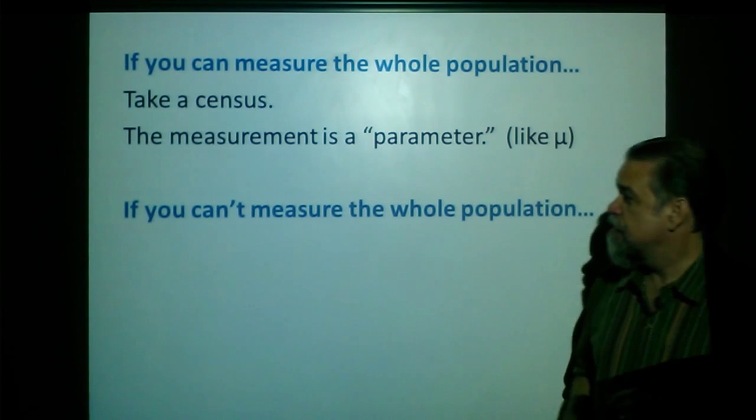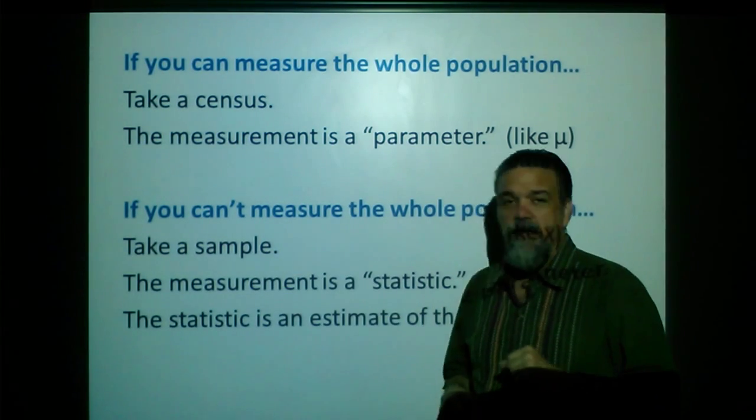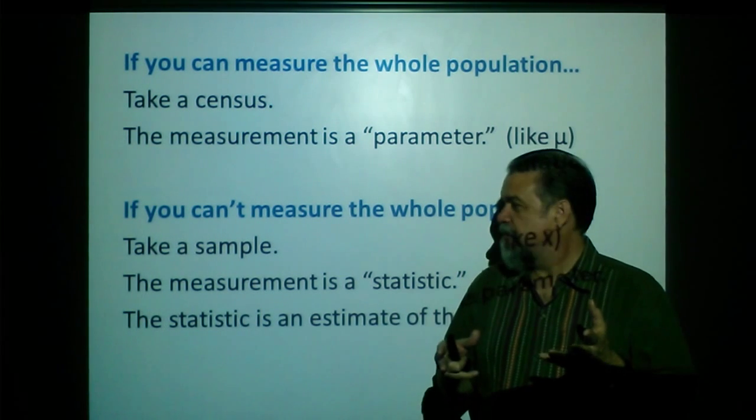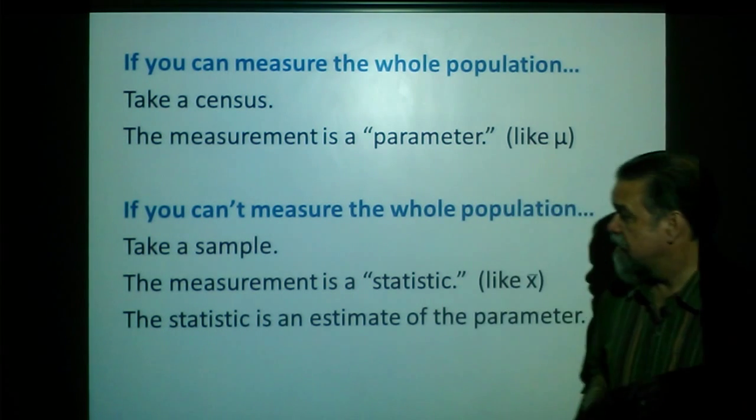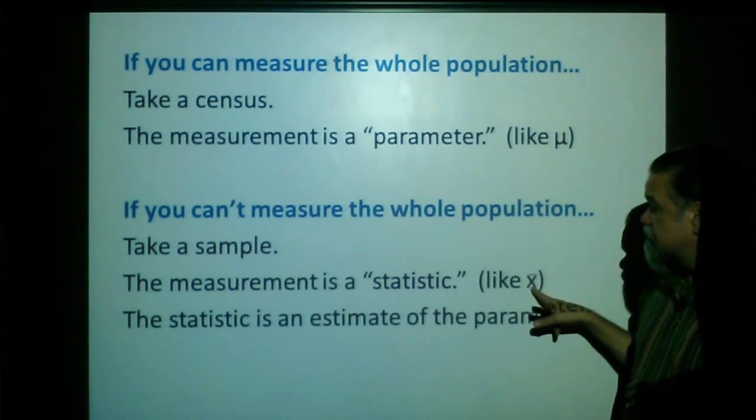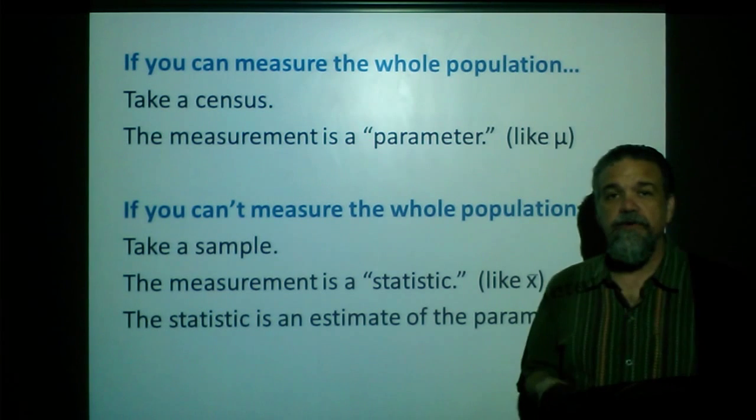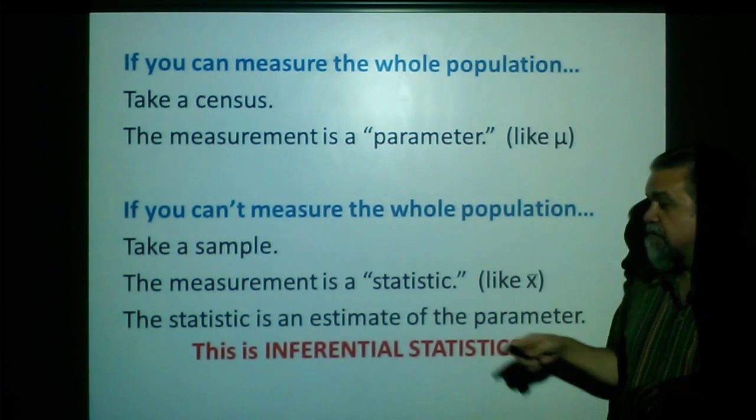Then what you do is you take a sample, just a portion of it. Now, how do I know that I didn't get a weird sample when I take that measurement? There's actually strategies you can use to try to get as representative a sample as possible. So, this measurement is called a statistic, like X bar. And the statistic is an estimate of the parameter. And that's what inferential statistics is.